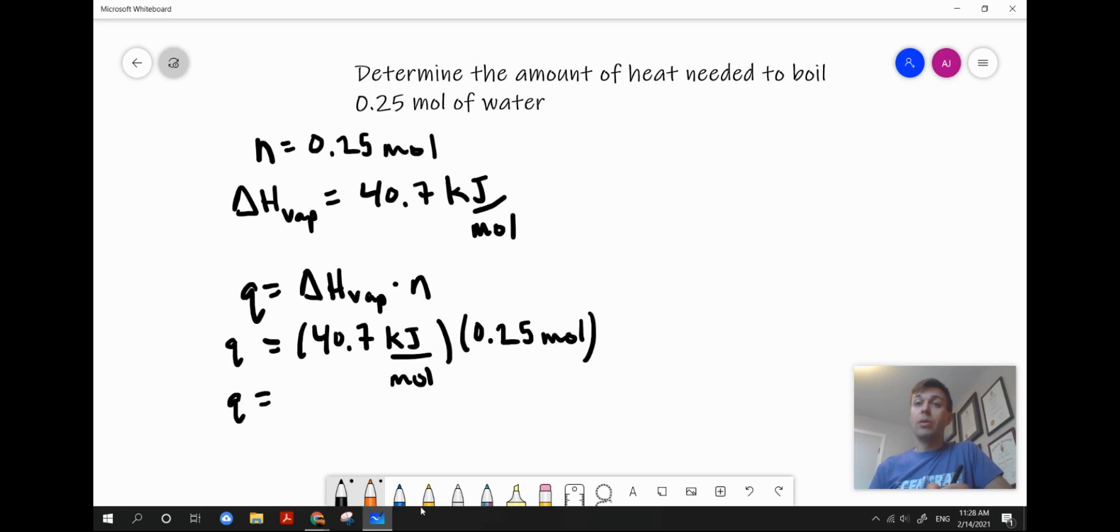So one mole requires 40.7 kilojoules. We have 0.25 moles, so we're trying to find out how much heat is going to be required for that smaller amount. So since we have less than one mole, we should expect that the heat is going to be less than 40.7.